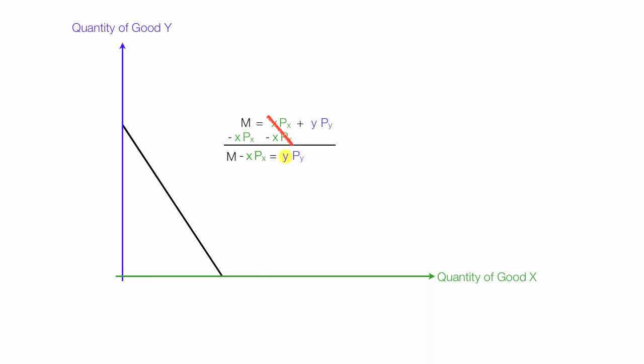Again, I'm going to isolate Y. I multiply both sides of the equation by 1 over the price of Y. On the right-hand side, the price of Y cancels. On the left-hand side, I divide everything by the price of Y. So I have income divided by the price of Y, minus the quantity of X times the price of X divided by the price of Y. This is all equal to Y.